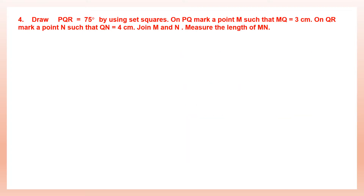Question 3: draw angle PQR equals 75 degrees by using set squares. Now, 75 degrees does not appear on any single set square, so we have to use two set squares combined. We use the set square that gives 45 degrees and the one that gives 30 degrees — adding both gives us 75 degrees.